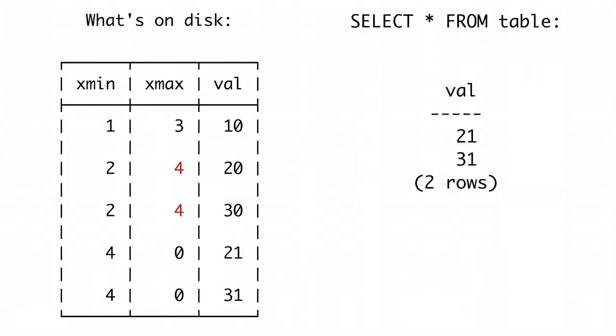One cost you may have noticed is that at no point did we actually delete anything. We marked things as no longer visible by setting an xmax, but we never cleaned anything up. No space was ever actually released to the OS. If you just do a lot of updates and deletes without some kind of maintenance, your table will grow indefinitely. This is often referred to as MVCC bloat. You need some way of cleaning this up, both for performance reasons and because you probably have a finite amount of disk space.